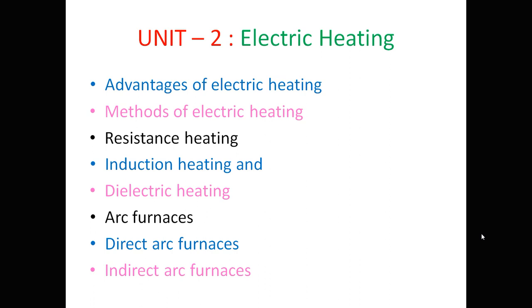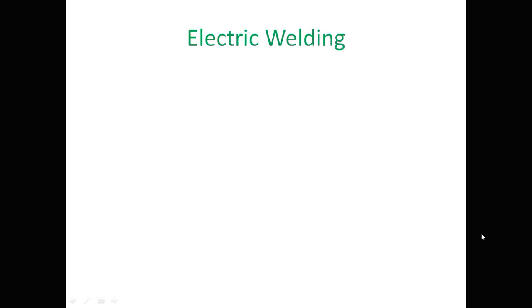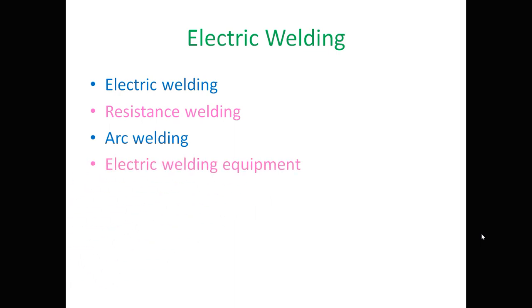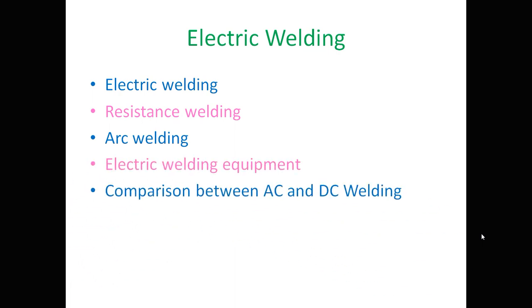This is one part of Unit 2, and the second part is Welding. Under this, we need to study what is meant by electric welding, resistance welding, arc welding, electric welding equipment, and comparison between AC and DC welding. These are the topics we need to study under Welding.